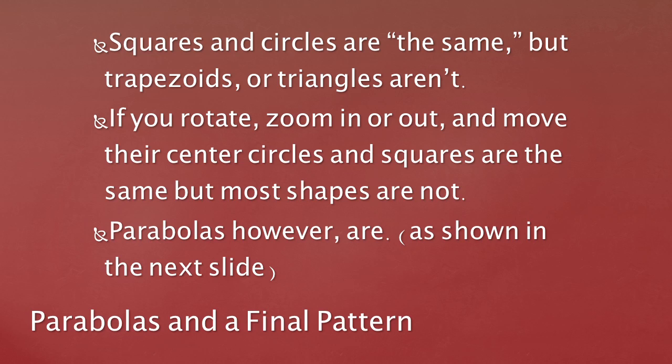This may sound weird because you saw that parabolas come in many different shapes and sizes, but like circles, they're all the same — just as squares are all the same. Triangles are not all the same: if you rotate and resize a square keeping proportions constant, all squares line up. But triangles won't always line up perfectly because of different side ratios — yet parabolas will.